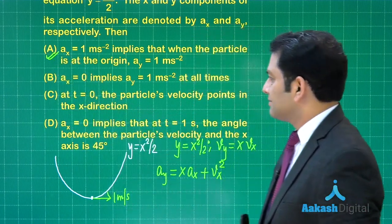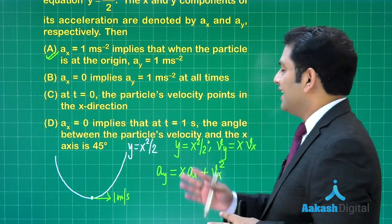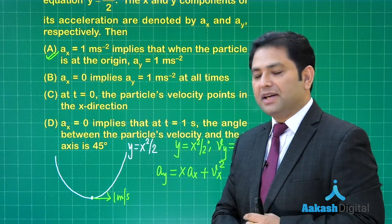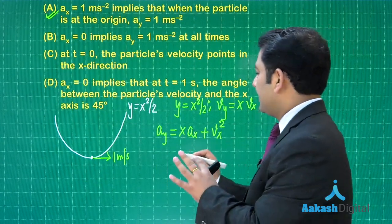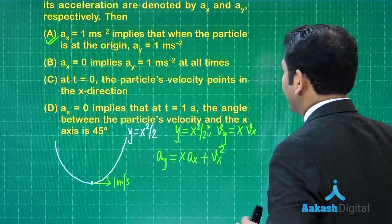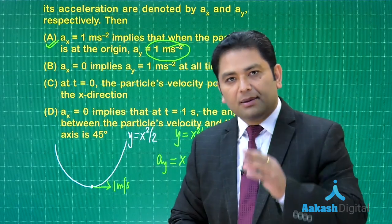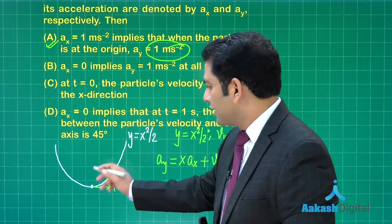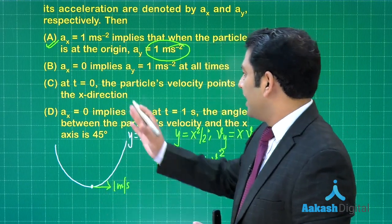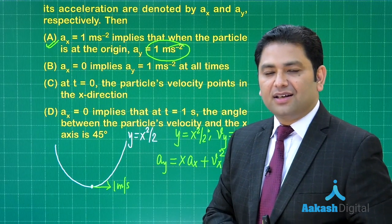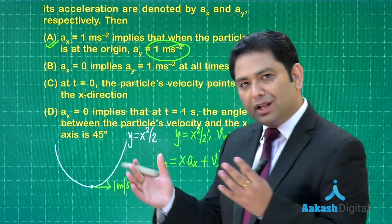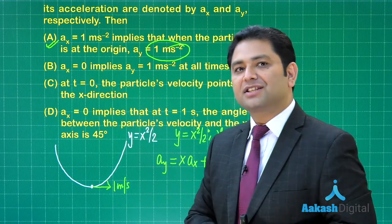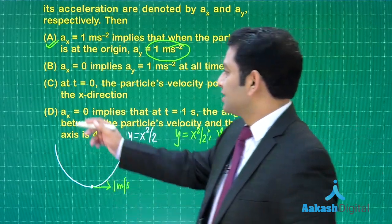Second option: ax equals zero implies ay is 1 meter per second squared at all times. That should be correct because at origin we found ay was 1 meter per second squared. But if it's a parabolic path, the acceleration is constant. Initially at origin, the entire acceleration along y direction was 1 meter per second squared, and this value remains constant at every point because the total acceleration must be constant and ax is already zero. So option B is correct.